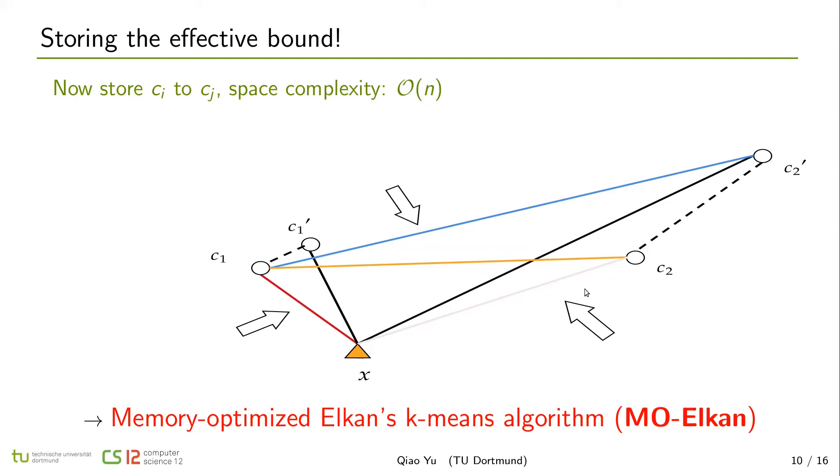In this example, we connect c1 to c2 and use c1 c2 minus x c1 as the lower bound of x c2. In this case, use c1 c2 minus x c1 and minus c2 c2' as the lower bound of x c2'. So we replace Elkan's lower bound by computing distance c1 and c2. Including these three bounds, we create memory-optimized Elkan, which can store less lower bounds to achieve less memory accuracy.